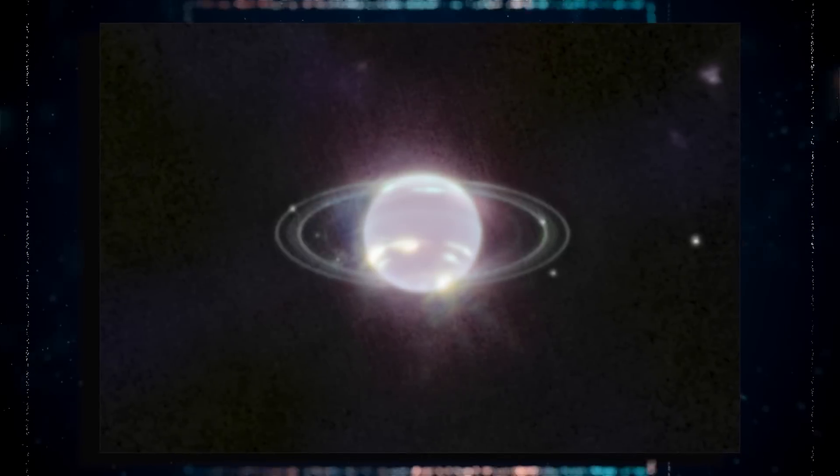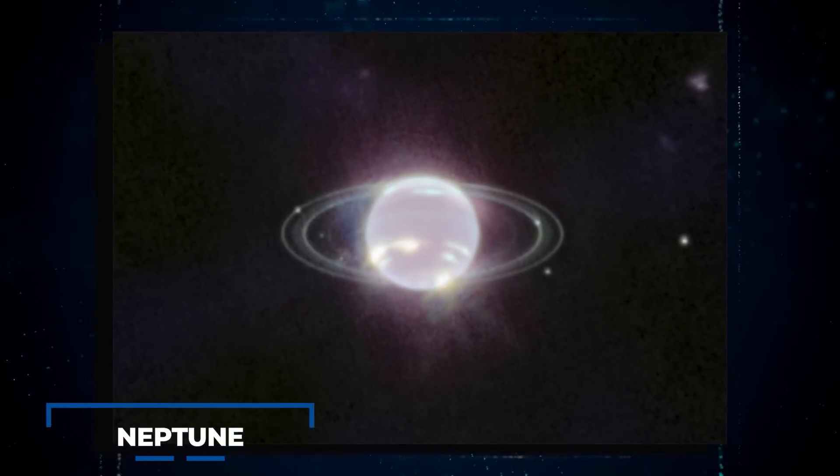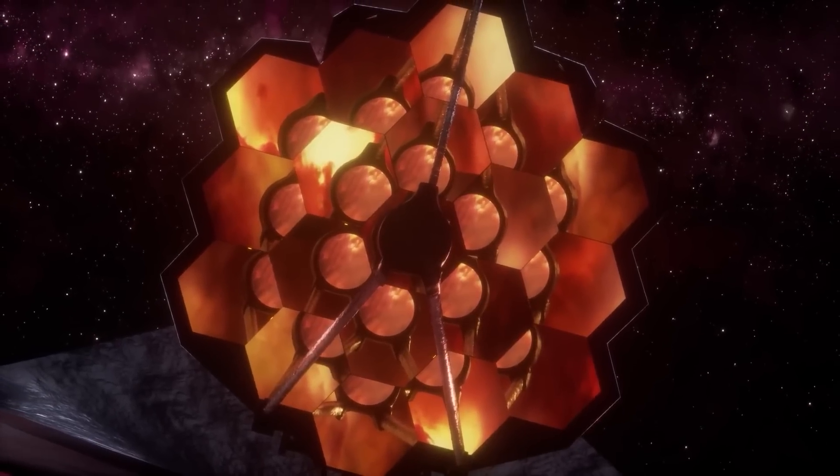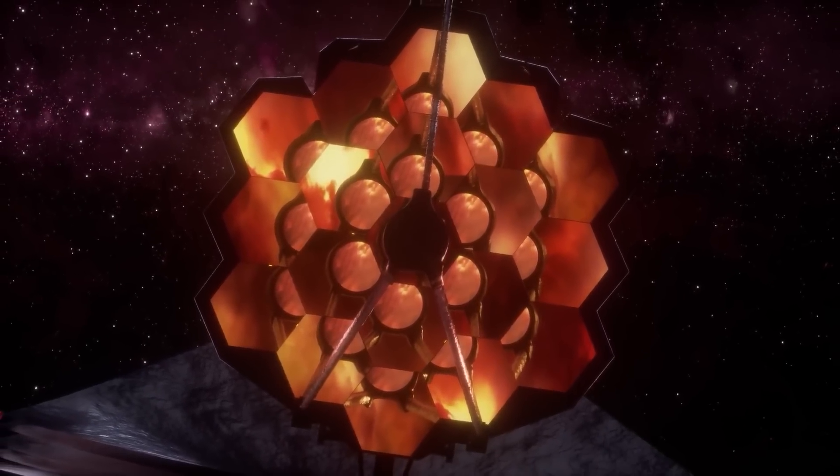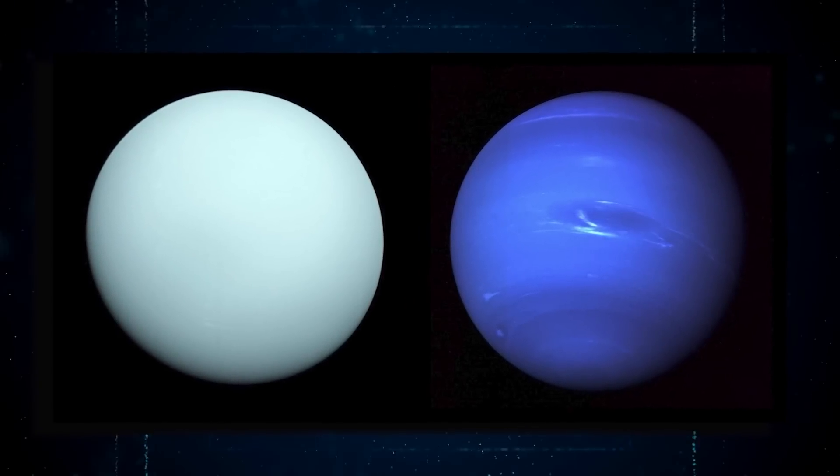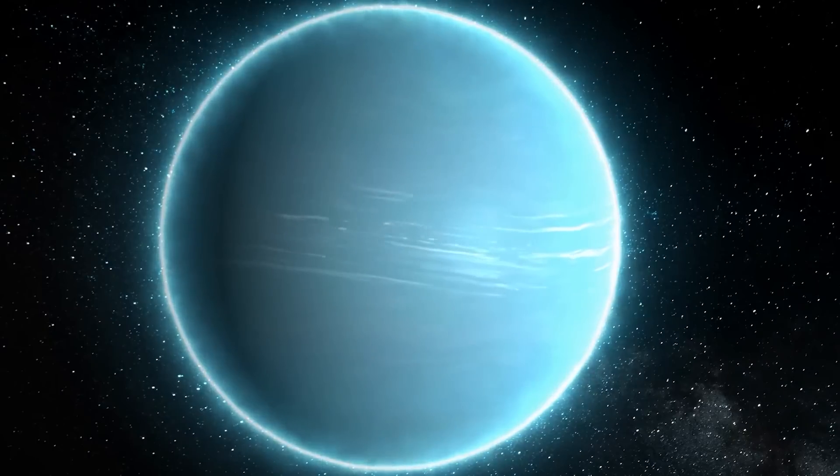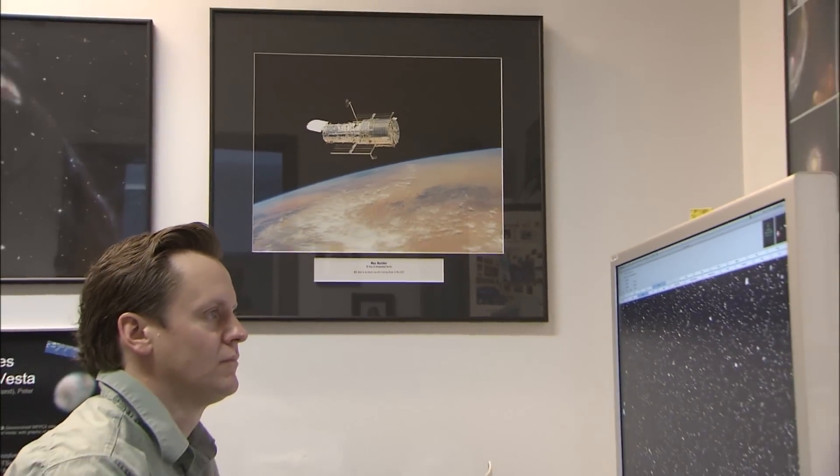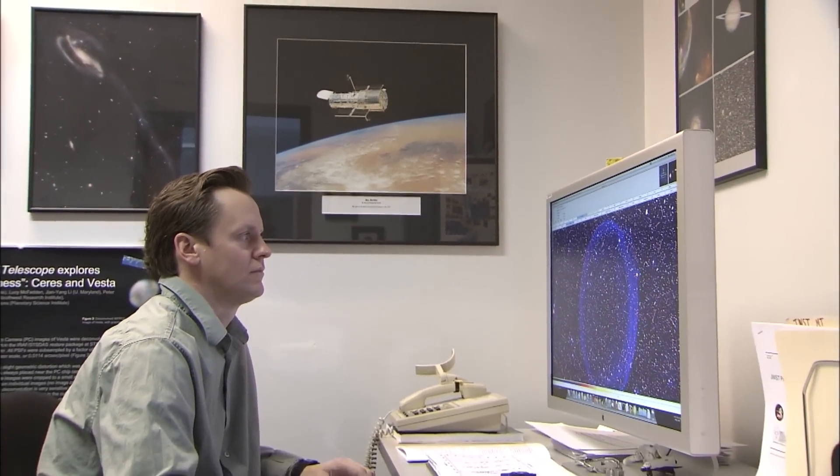And now, following in the footsteps of its stunning Neptune image release in 2022, NASA's James Webb Space Telescope has recently captured another breathtaking image of our solar system's other ice giant, Uranus. The latest image features spectacularly vivid rings and bright features in Uranus' atmosphere, providing astronomers with a treasure trove of data to unlock the planet's secrets.